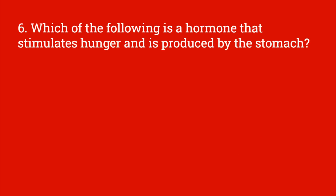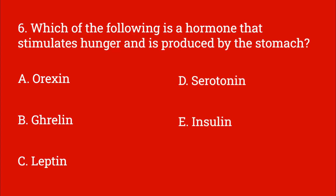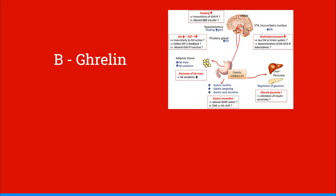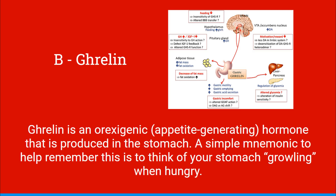Which of the following is a hormone that stimulates hunger and is produced by the stomach? Orexin, ghrelin, leptin, serotonin, or insulin. And this would be B, ghrelin. Ghrelin is an orexigenic, or appetite-generating hormone, that is produced in the stomach. A simple mnemonic to help remember this is to think of your stomach growling when hungry.